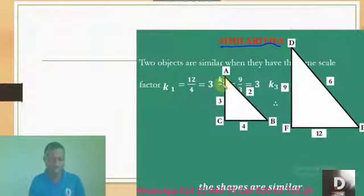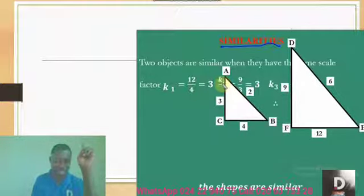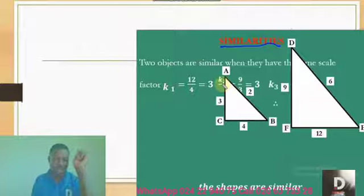When they are similar, they are not the same. Take note. They are similar when they have equal scale factors. They have something in common. The scale factors of each of the sides is the same. What do I mean by that?